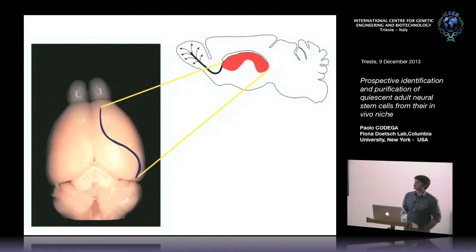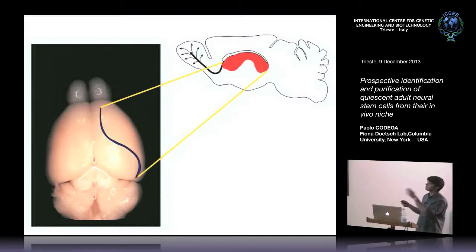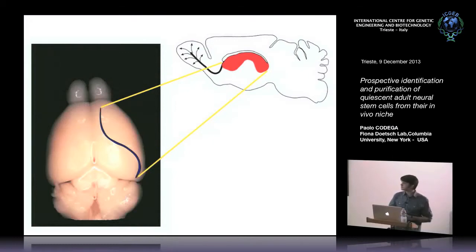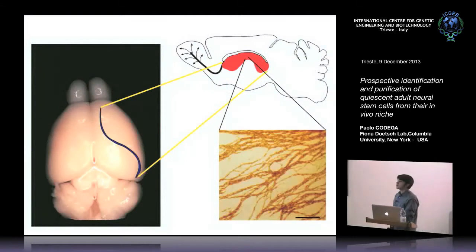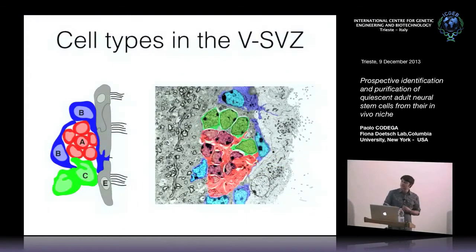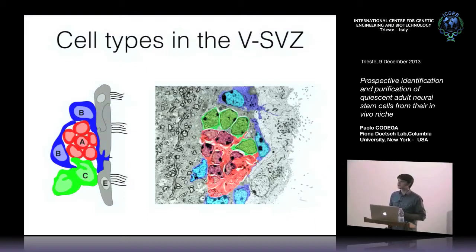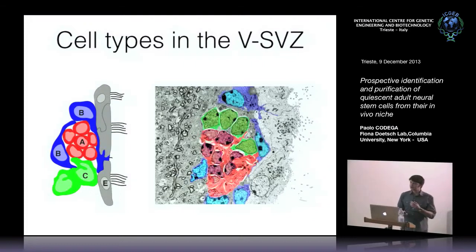If you look at the lateral ventricle, and we open the brain and look at the lateral wall of the ventricle, we will see chains of migrating neuroblasts. There are different cell types in the SVZ. There are large multiciliated ependymal cells that, with their motile cilia, can help drive the flow of cerebrospinal fluid.